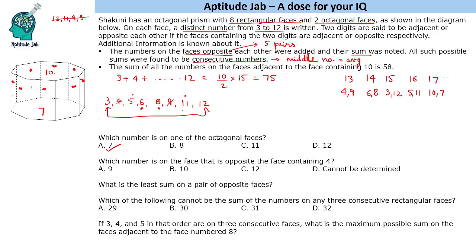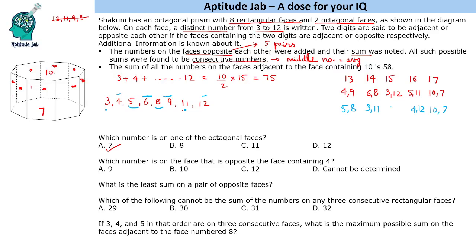Another case for 13: we can take 5 and 8, that is also 13. Then for 14, since 4+10 is not possible and 6+8 is used, we use 3 and 11 for 14. For the remaining numbers 4, 6, 9, 12, we can make 16 using 4 and 12, and 15 using 6 and 9. So these are the two valid ways to arrange the pairs.